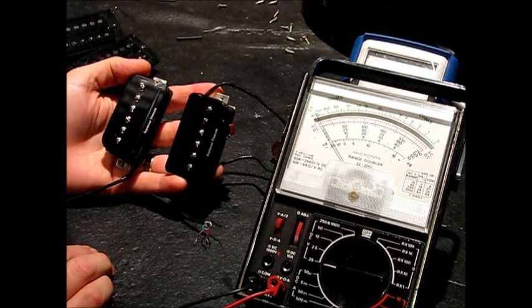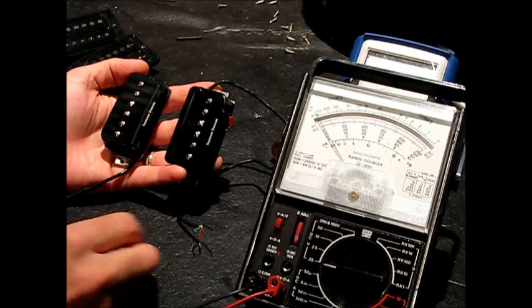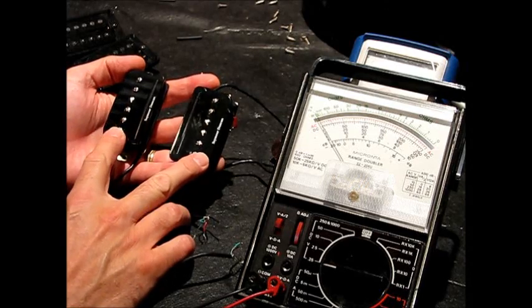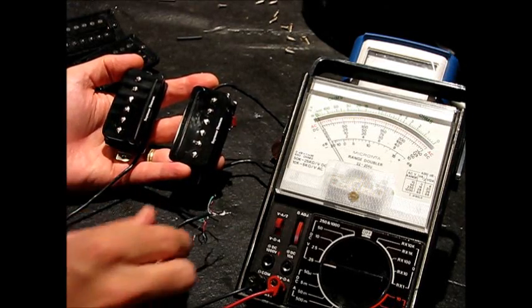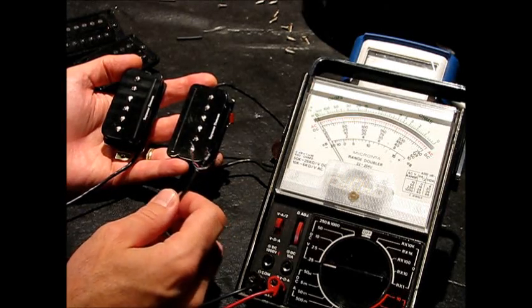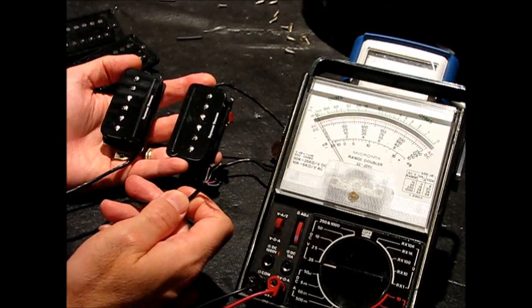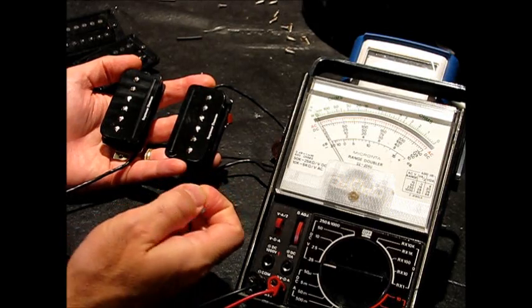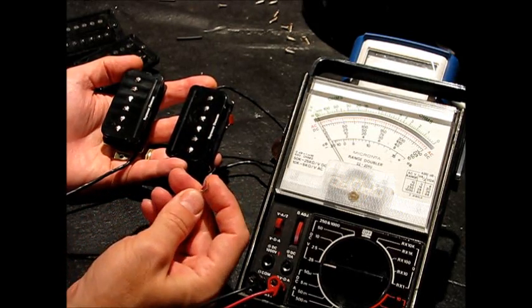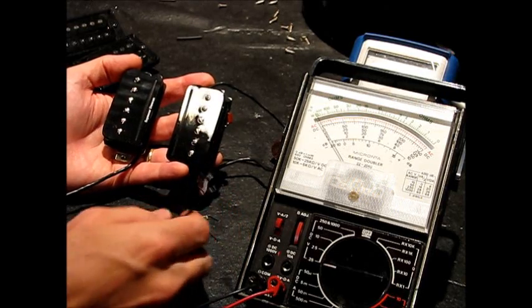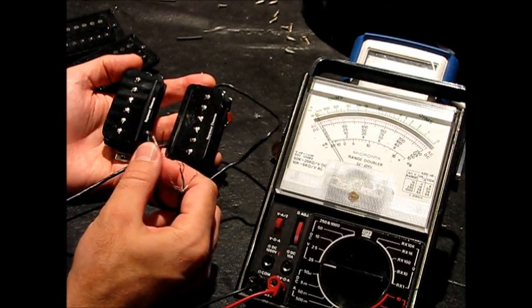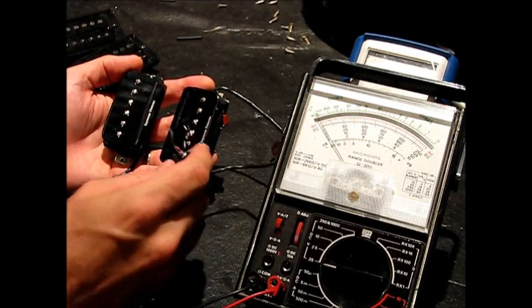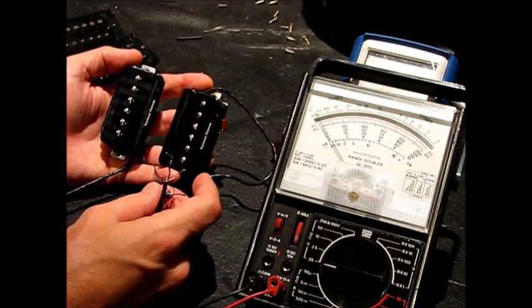And one other thing about that that's actually nice on the part of Seymour Duncan is even though these pickups are configured with opposite magnetic polarities, they've still wired them internally so that when they come out onto the wiring, they are still what's considered kind of standard Seymour Duncan polarities. The white and black is one coil with the black being positive, the green and red is the other coil, and the red is the positive. So that doesn't change, that doesn't swap around when you go to the other pickup. We covered all the other differences there, but at least that part of it, the electrical phase is still consistent with what you're used to seeing from Seymour Duncan.